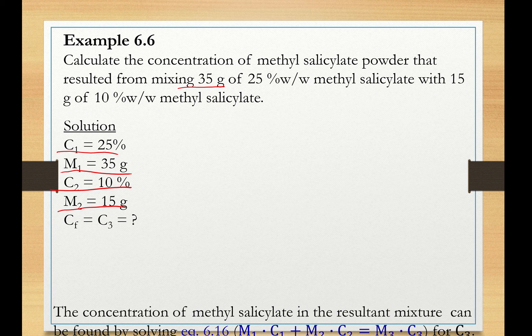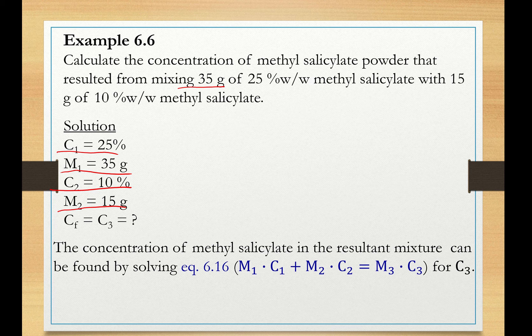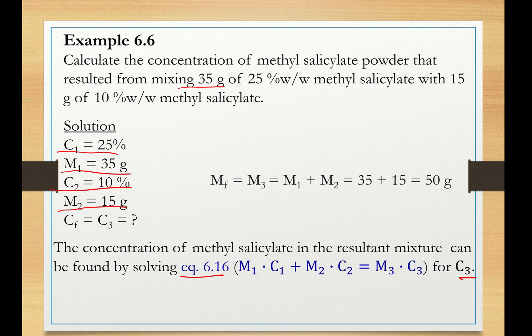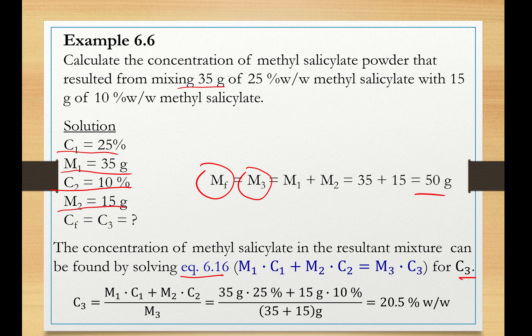What is the concentration with respect to the drug after mixing these two powders? Using equation 6.16 and solving for CF or C3, the total mass after mixing is equal to 50 grams, we end up with a concentration of 20.5%. Now, this is a reasonable answer because we have mixed a concentration of 25% with a concentration of 10%. So a concentration in between these two is a very reasonable answer.